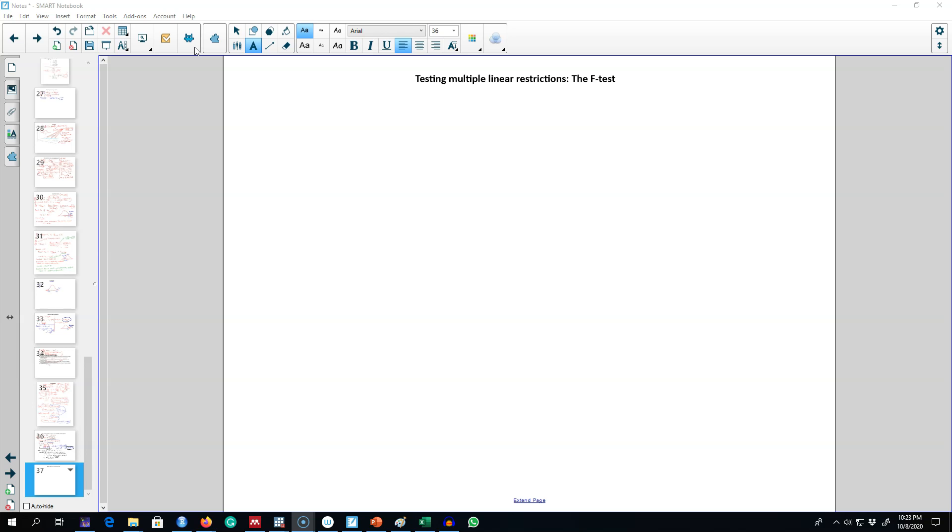More precisely, the null hypothesis is that a set of variables has no impact on y. That is in contrast with our previous t-test where we were testing only about one particular variable. We are testing this hypothesis for a group of variables. Let me show you an example.